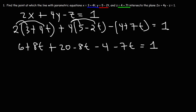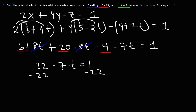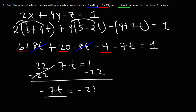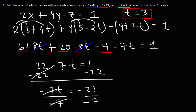Now let's combine like terms. So we have 6 plus 20, which makes 26, minus 4, so that's 22. 8t and negative 8t will cancel, so we're left with 22 minus 7t equals 1. Our next step is to subtract both sides by 22. 1 minus 22 is negative 21. And then we need to divide both sides by negative 7. Negative 21 divided by negative 7 is 3, so t is equal to 3.